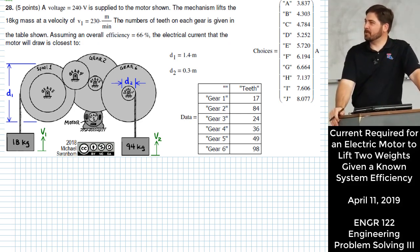For this setup we have a motor that is driving two different winches through a little gear train and there's going to be two different velocities for the two masses that are being lifted.